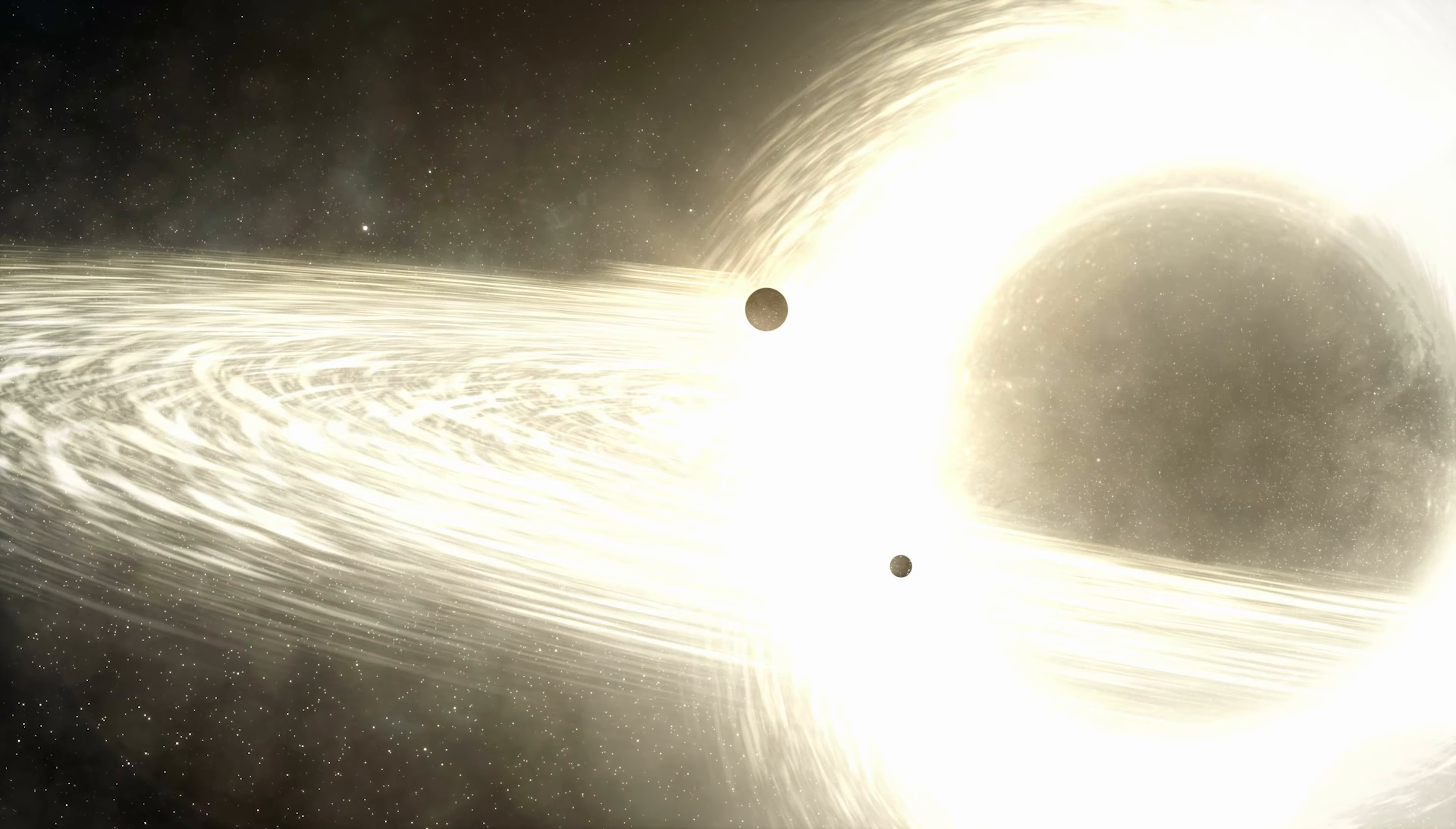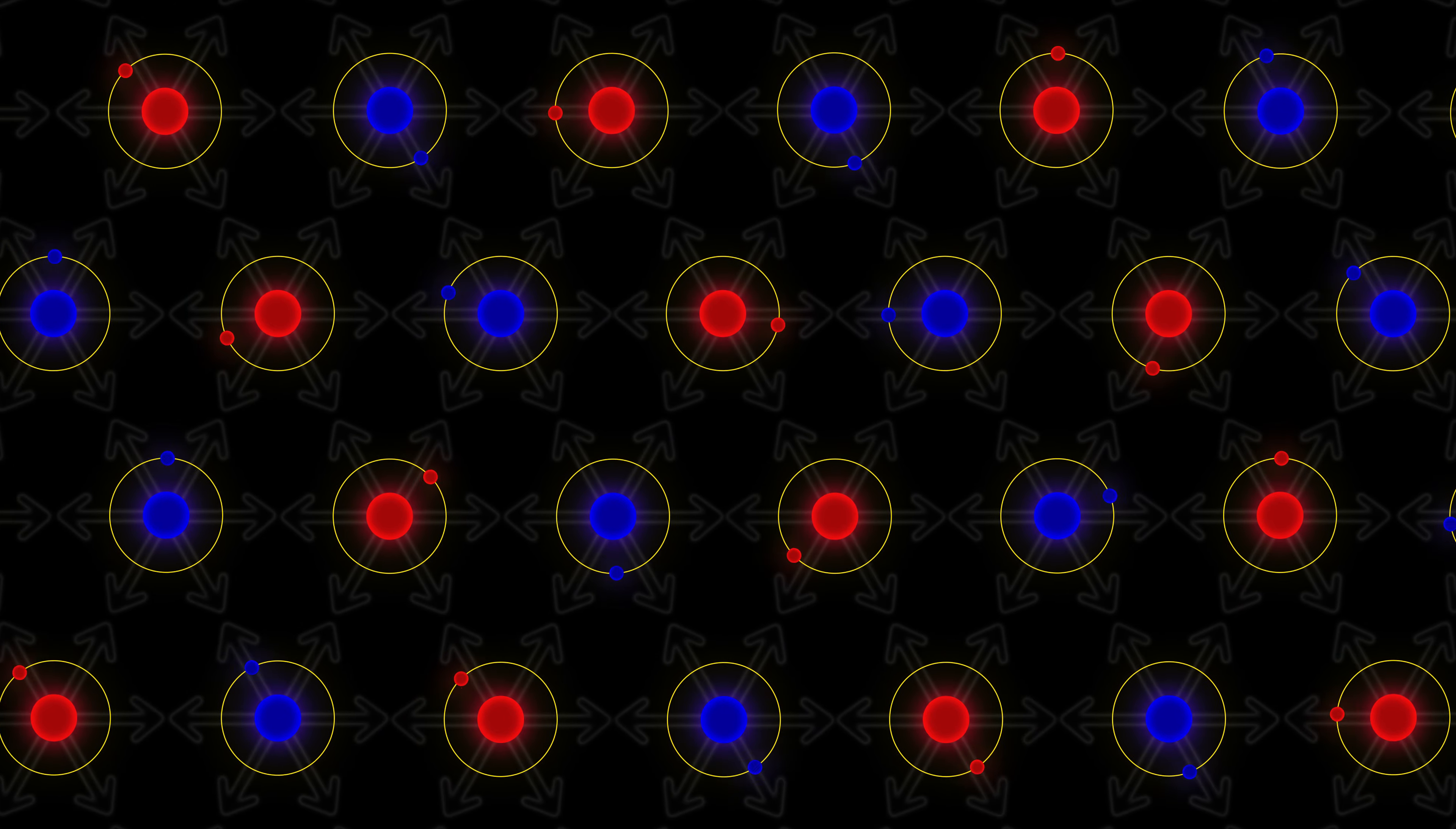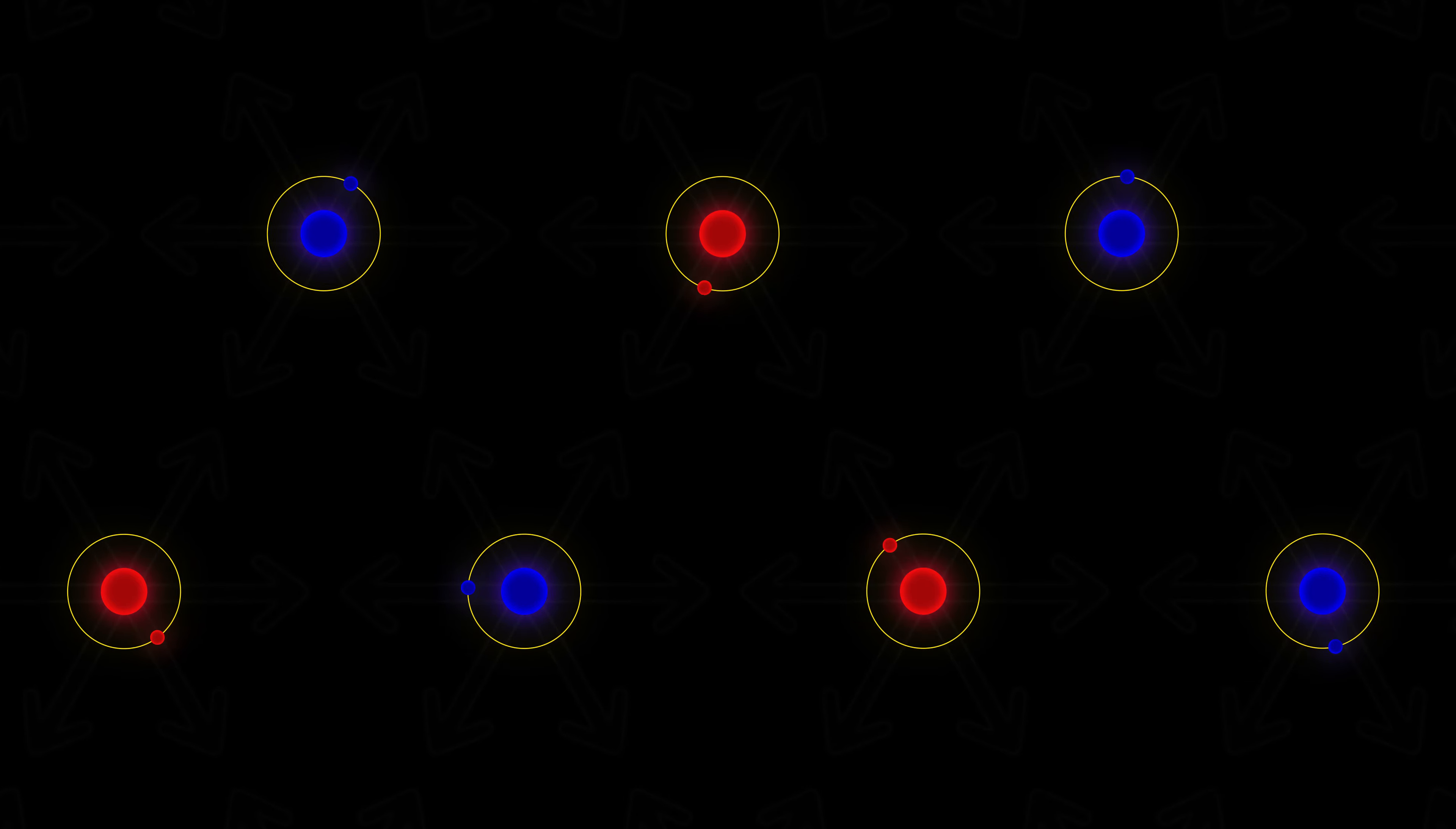And it would explain why we don't observe black holes growing from stellar mass size to supermassive. Because all the supermassive black holes were formed not from slow accretion, but rather from this early catastrophic event. And it explains why there is anything at all because uniform expansion of space should have isolated all material from each other at the very beginning, leaving the universe without structure, just a fine mist of rarefied particles.